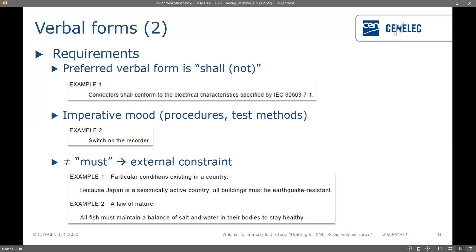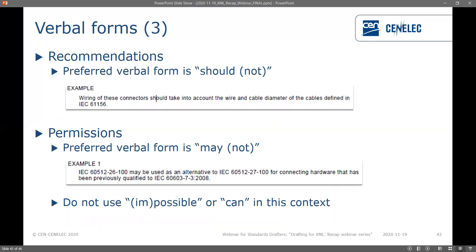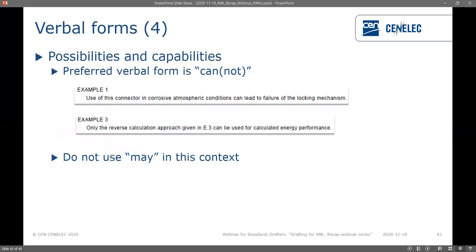For recommendations, the preferred verbal form is 'should' or 'should not'; alternatives can be found in IR3. For permissions, the preferred verbal form is 'may' or 'may not', for example 'may be used'. Very importantly: do not use 'possible' or 'impossible' or 'can' or 'cannot' in this context because 'can' and 'cannot' are used for possibilities and capabilities — the preferred verbal form for that is 'can' or 'cannot'. Do not use 'may' in the context of possibilities. Please make a very good distinction between these.